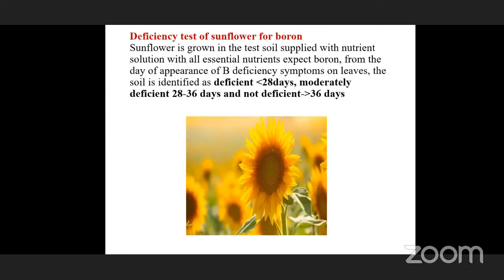This is the deficiency test of sunflower for boron. Sunflower is grown in the test soil and supplied all nutritional solution except boron. If deficiency symptoms appear on leaves by day 28, the soil is considered deficient. If symptoms appear between 28 to 36 days, the soil is moderately deficient. If no deficiency symptoms appear even after 36 days, then the soil has adequate availability of boron.